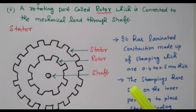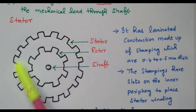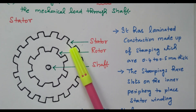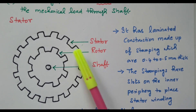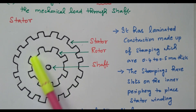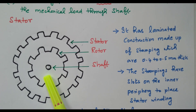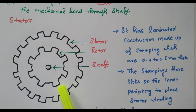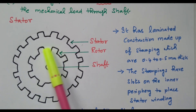Now we will see the diagram. This is the overview of the three-phase induction motor. The outer part is the stator. This portion is the stator slot — the windings are placed in the slots provided for placing the stator winding. This inner part is the rotor, the rotating part through which the load is connected. This is the shaft. The rotor is placed on the shaft, and here also slots are available where copper winding or copper bars are placed.